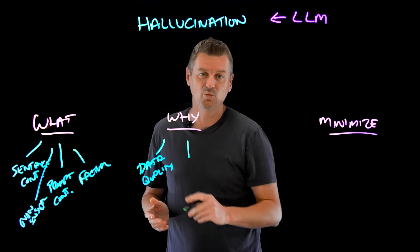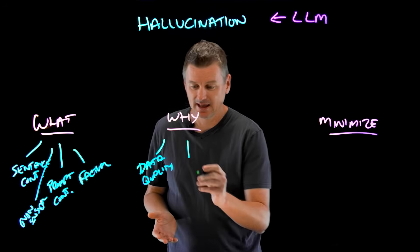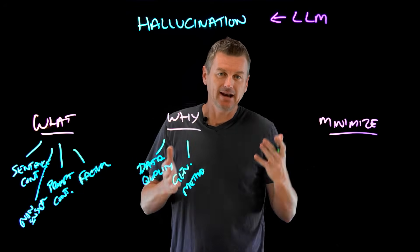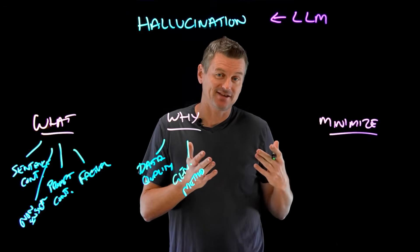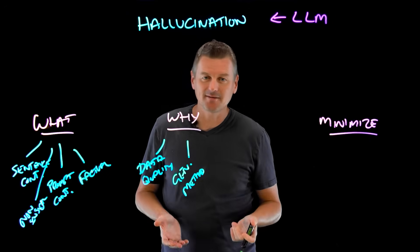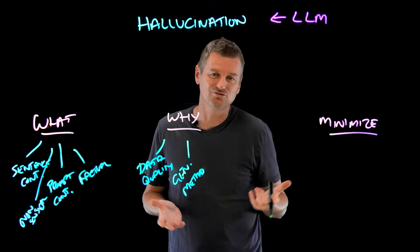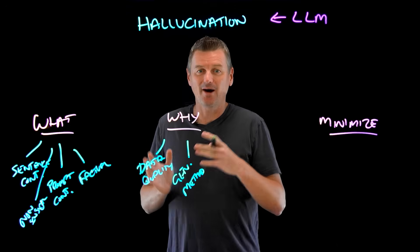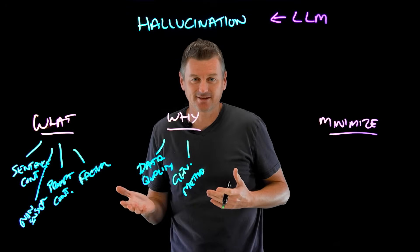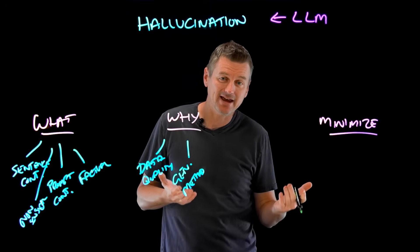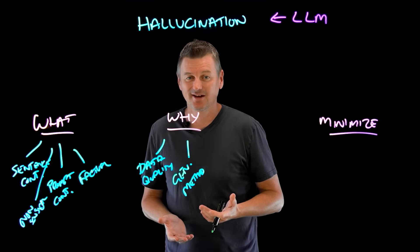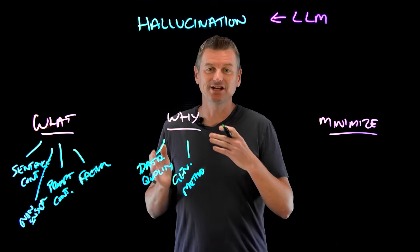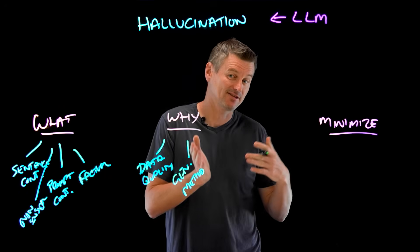Another reason why hallucinations can happen is based upon the generation method. LLMs use various methods and objectives to generate text, such as beam search, sampling, maximum likelihood estimation, or reinforcement learning. These methods may introduce biases and trade-offs between things like fluency and diversity, between coherence and creativity, or between accuracy and novelty. For example, beam search may favor high probability but generic words over low probability but specific words.